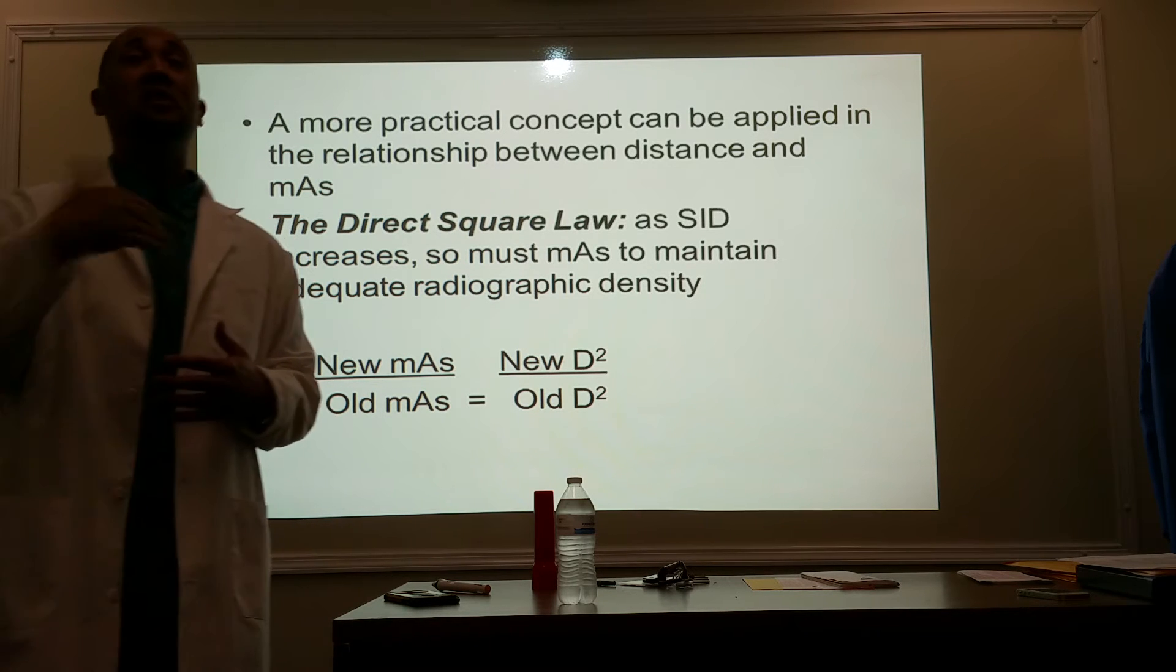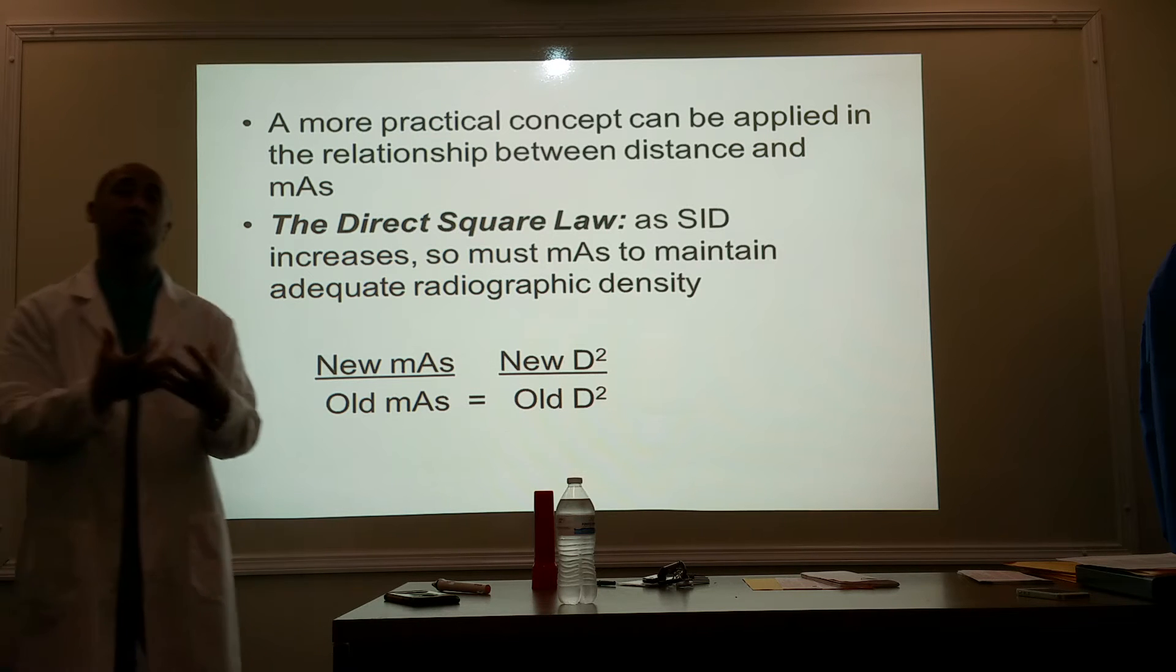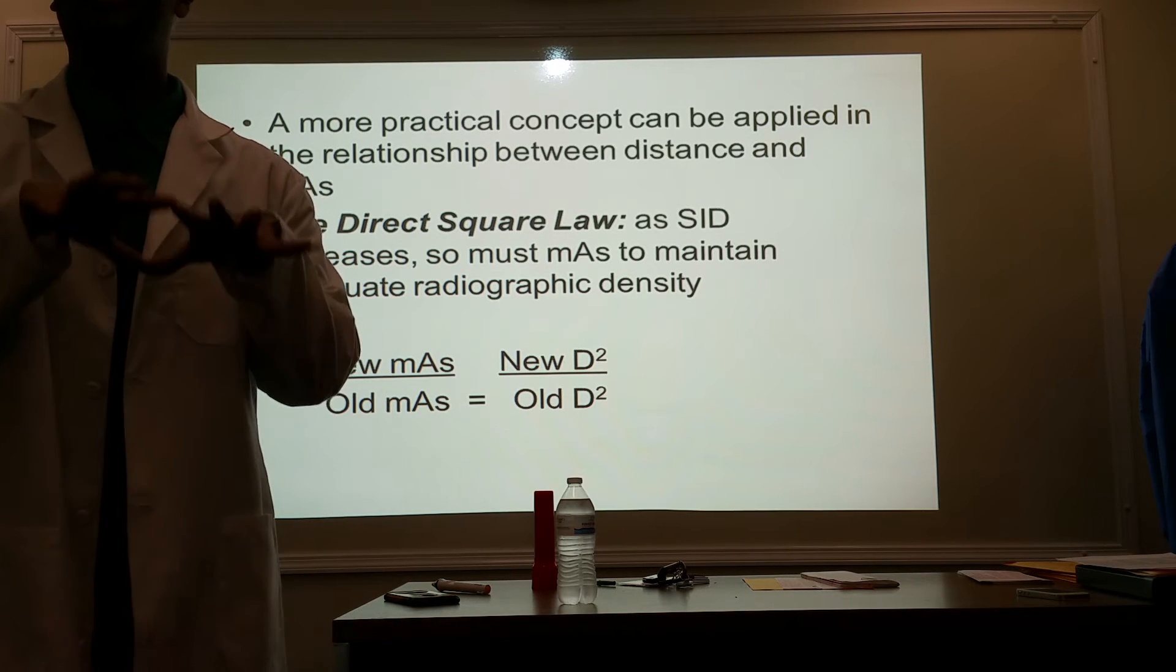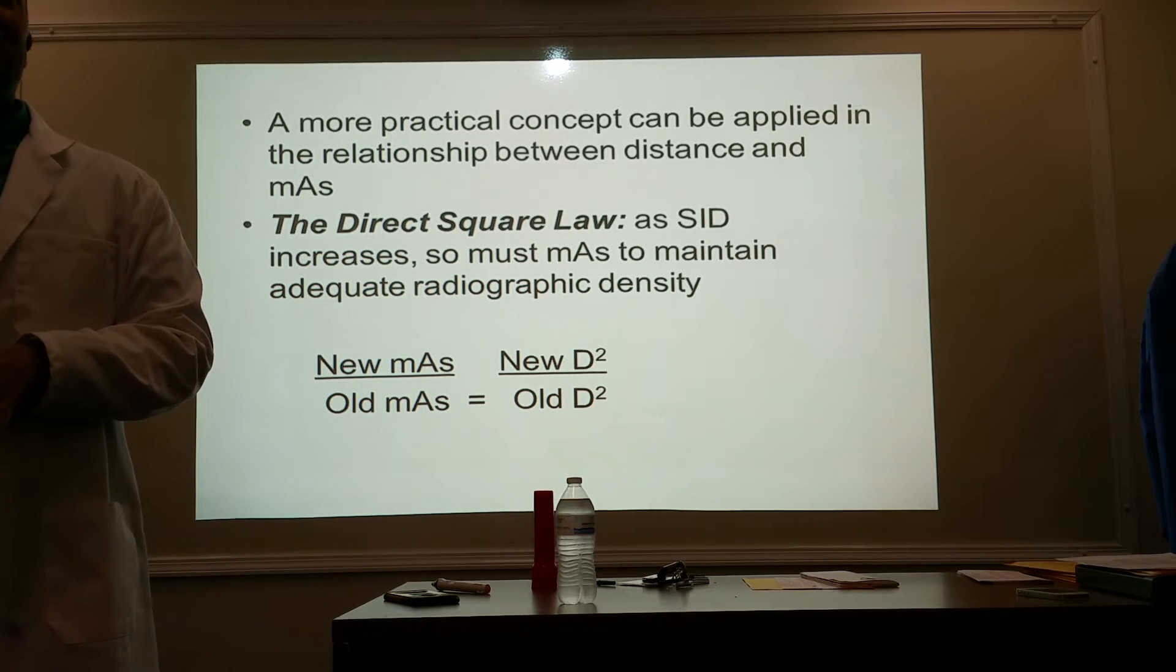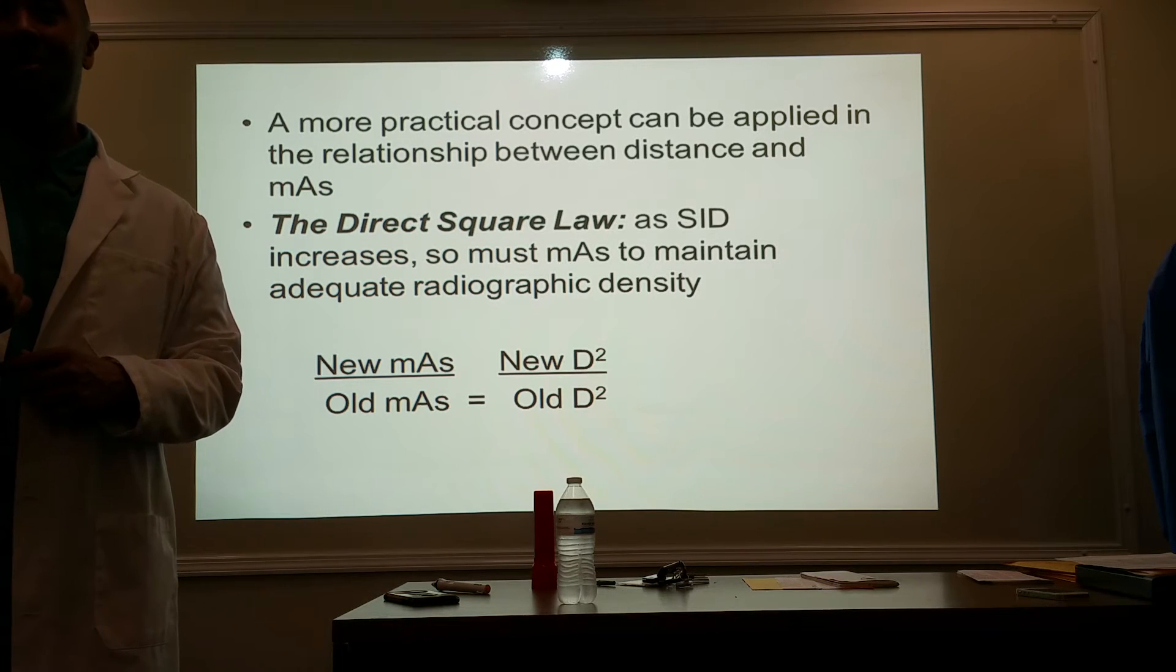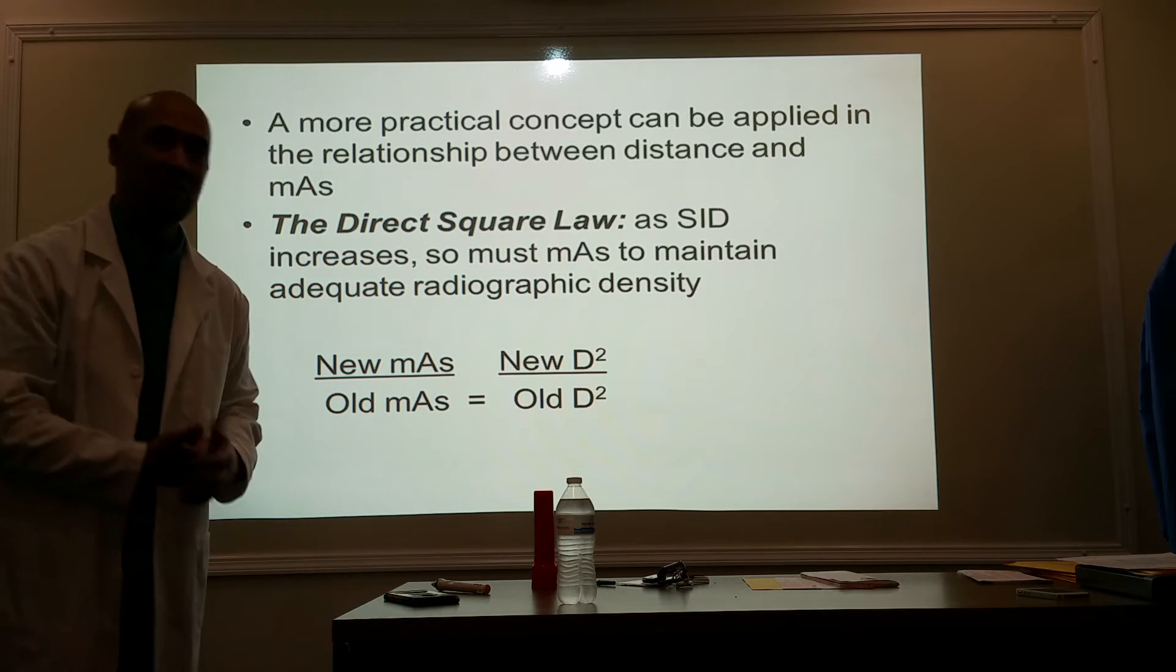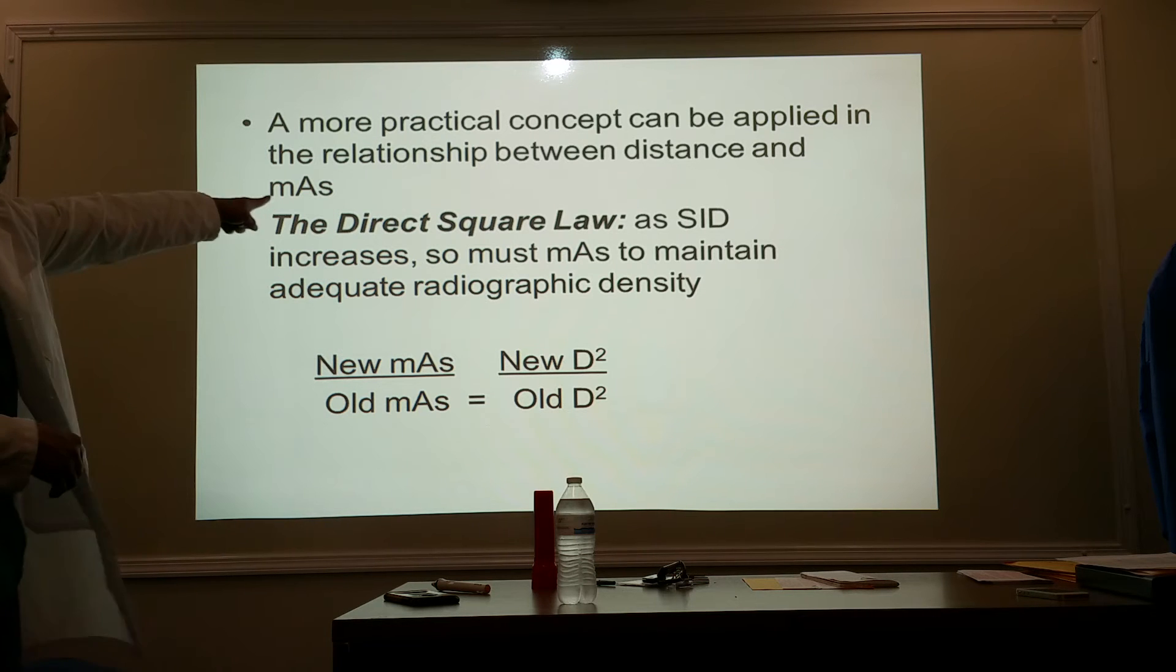But it's going to change. And with all the changes in distances, you need to know what kind of modifications you can do with your technical factors to make sure that your density stays the same. Because what we know is the further you get, the less intense it is. So, that's telling me I need to bump up my technical factors. If I'm closer, it's going to be too intense. So, I have to decrease my technical factors. But by how much?